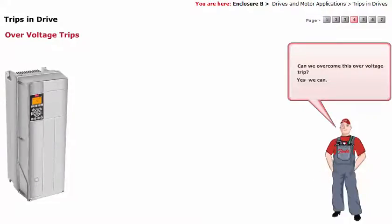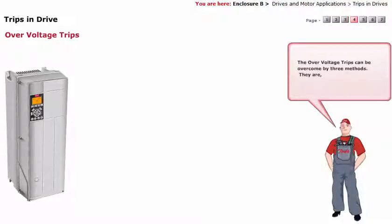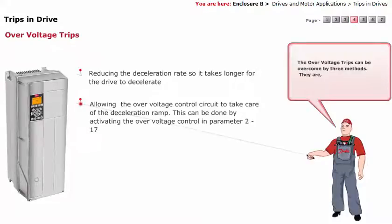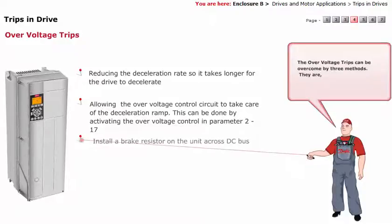Yes, we can. The over voltage trips can be overcome by three methods. They are: reducing the deceleration rate so it takes longer for the drive to decelerate; allowing the over voltage control circuit to take care of the deceleration ramp, which can be done by activating the over voltage control in parameter 217; or installing a brake resistor on the unit across the DC bus.